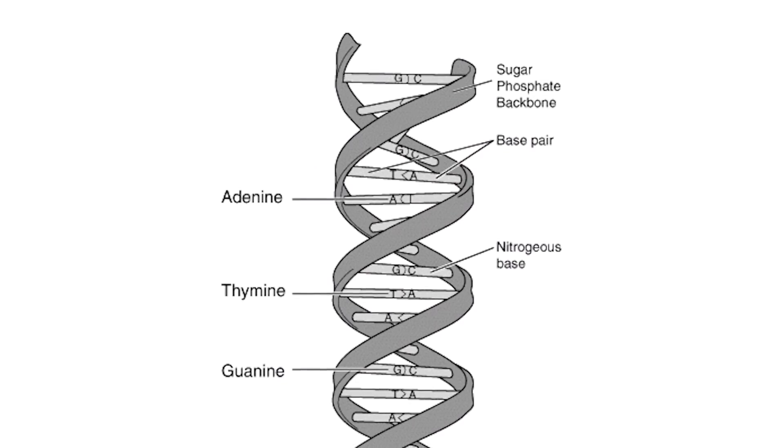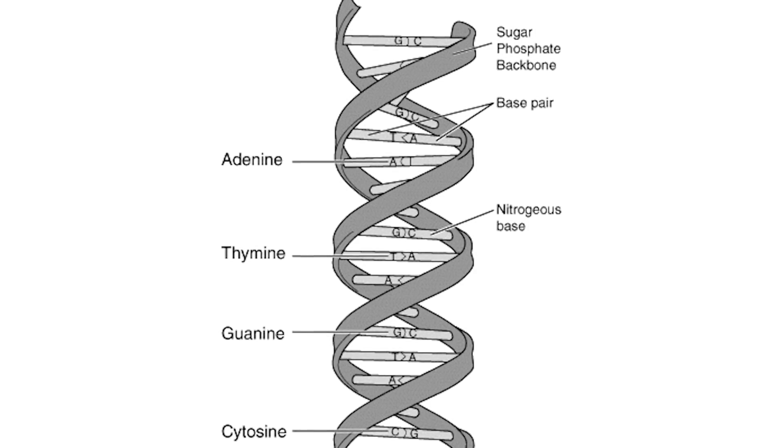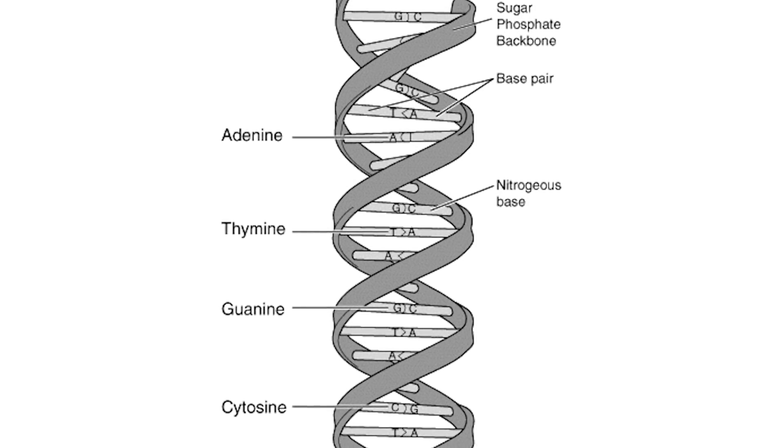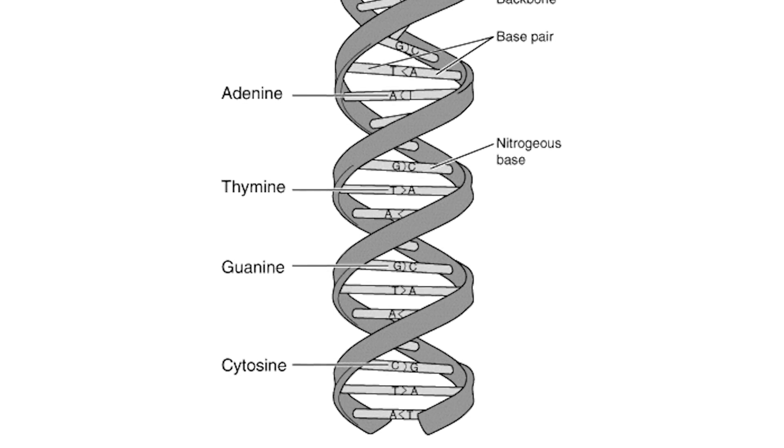Because at each site along the DNA strand, there are four possibilities. You have the four different nucleotide bases: adenine, guanine, thymine, and cytosine—A, T, C, and G. So anytime one of them is fixed, it eliminates three other possibilities, and therefore there's a calculable amount of Shannon information conveyed at each site along the growing DNA strand.